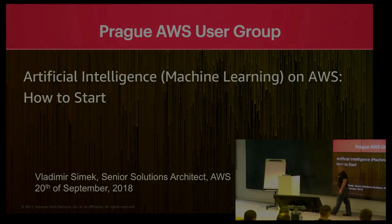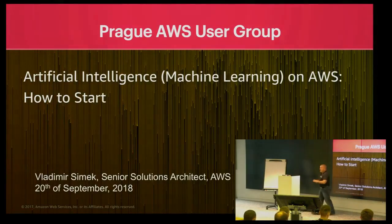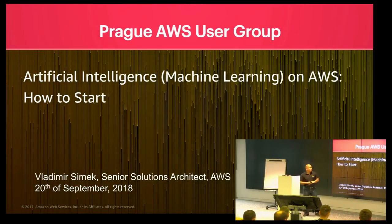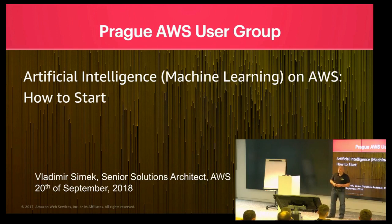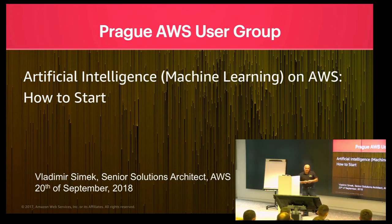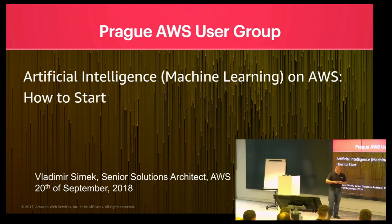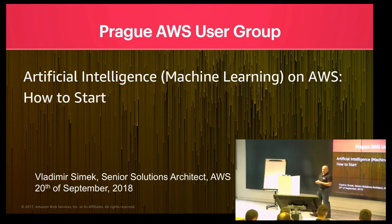Good evening. Welcome. For those who don't know me yet, my name is Vladimir Shemek. I'm the solutions architect at Amazon Web Services, now for more than three and a half years already. And today, or tonight, or whatever you call it, we are going to speak about artificial intelligence or machine learning on AWS — how to start.